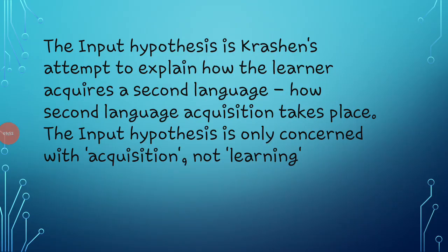Next is the input hypothesis. The input hypothesis is Krashen's attempt to explain how the learner acquires a second language and how second language acquisition takes place. The input hypothesis is only concerned with acquisition and not with learning. According to this hypothesis, the learner improves and progresses along the natural order when he or she receives second language input that is one step beyond his or her current stage of linguistic competence.